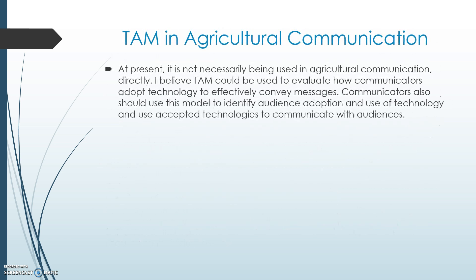The Technology Acceptance Model appears to be used in agriculture and extension in Malaysia, Italy, Nigeria, and other countries around the world. However, no articles were found about its use in U.S. agriculture or in agricultural communication specifically. This model would be very useful in evaluating behavioral intentions to use new agriculture technology and to effectively communicate about available ag technologies using a variety of methods and systems. The model has been well received and utilized by those developing information systems as well as those introducing technologies in other industries, and is being successfully used to evaluate systems' likely adoption and use.